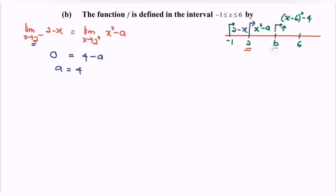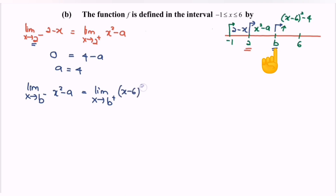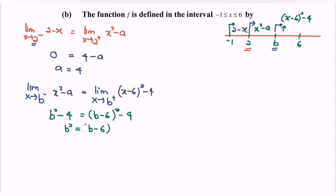Next, we find b. The limit as x approaches b from the left uses the function x squared minus a, giving b squared minus a, where a equals 4. The limit from the right uses (x minus 6) squared minus 4, giving (b minus 6) squared minus 4. Setting these equal: b squared minus 4 equals (b minus 6) squared minus 4, which simplifies to b squared equals (b minus 6) squared.